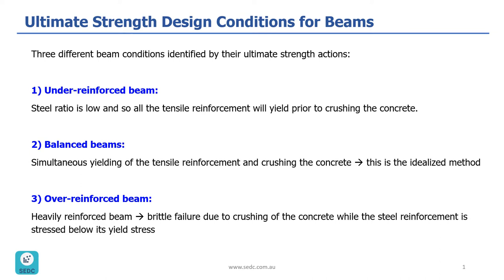The third condition, which is over-reinforced beams, is related to heavily reinforced sections. Over-reinforced beams will have brittle failures since concrete as a brittle material crushes while the reinforcement is still in its elastic stress range. These types of beams give no warning of failure, which is sudden and catastrophic.